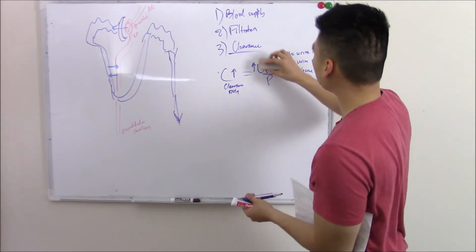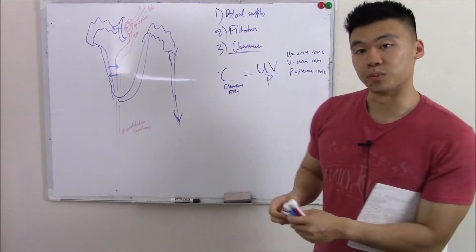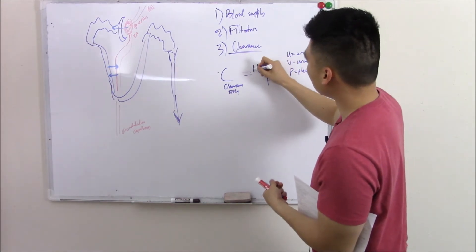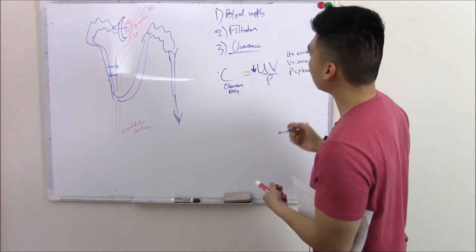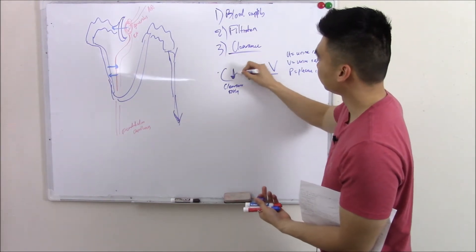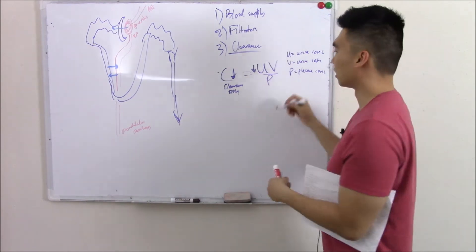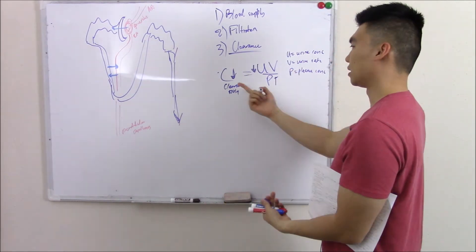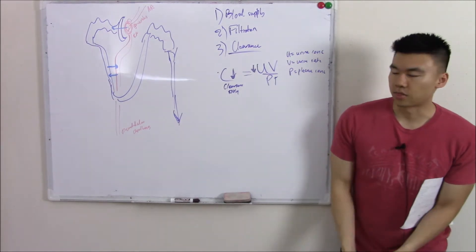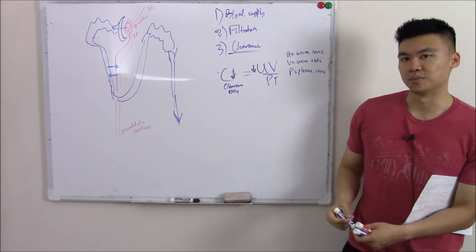Now let's flip the script and talk about amino acids. We said amino acids are valuable commodities — we want to keep those. So urine concentration would be low, and by definition mathematically clearance would be low. Plasma concentration will be high — we're keeping all that in our blood — and again mathematically that just means clearance is low. That's just a formula they like to throw in to try and trick you.